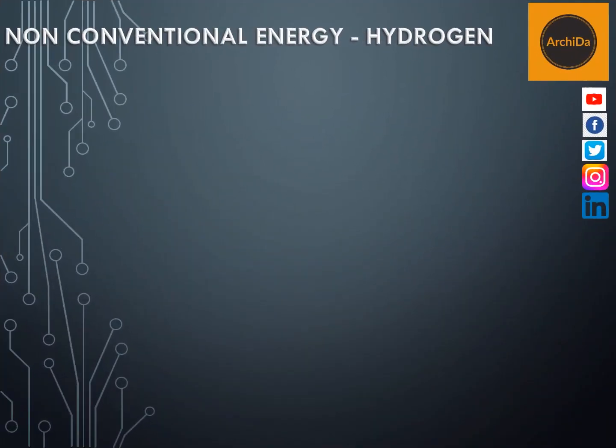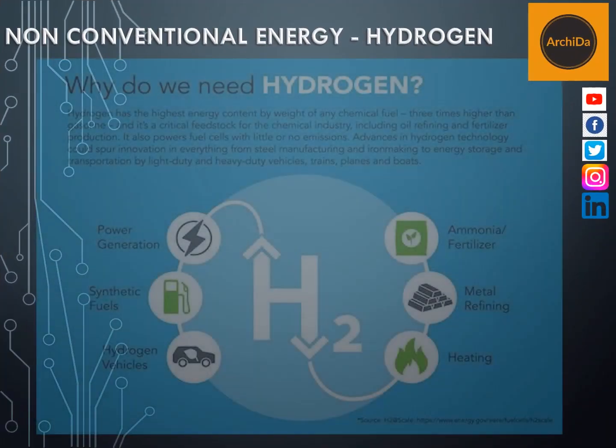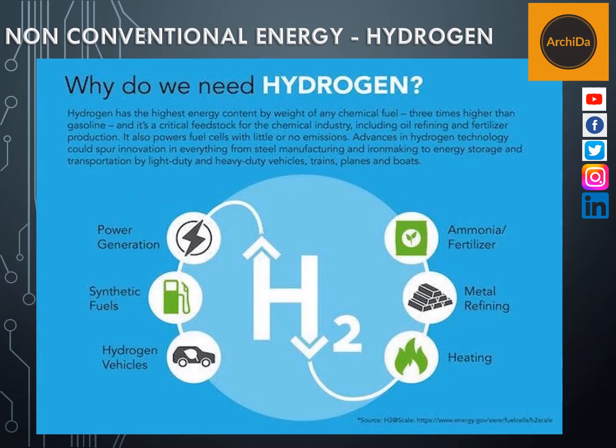The next non-conventional energy is hydrogen. Hydrogen is the simplest element. An atom of hydrogen consists of only one proton and one electron. It is also the most plentiful element in the universe. Despite its simplicity and abundance, hydrogen doesn't occur naturally as a gas on Earth — it is always combined with other elements. Water, for example, is a combination of hydrogen and oxygen.